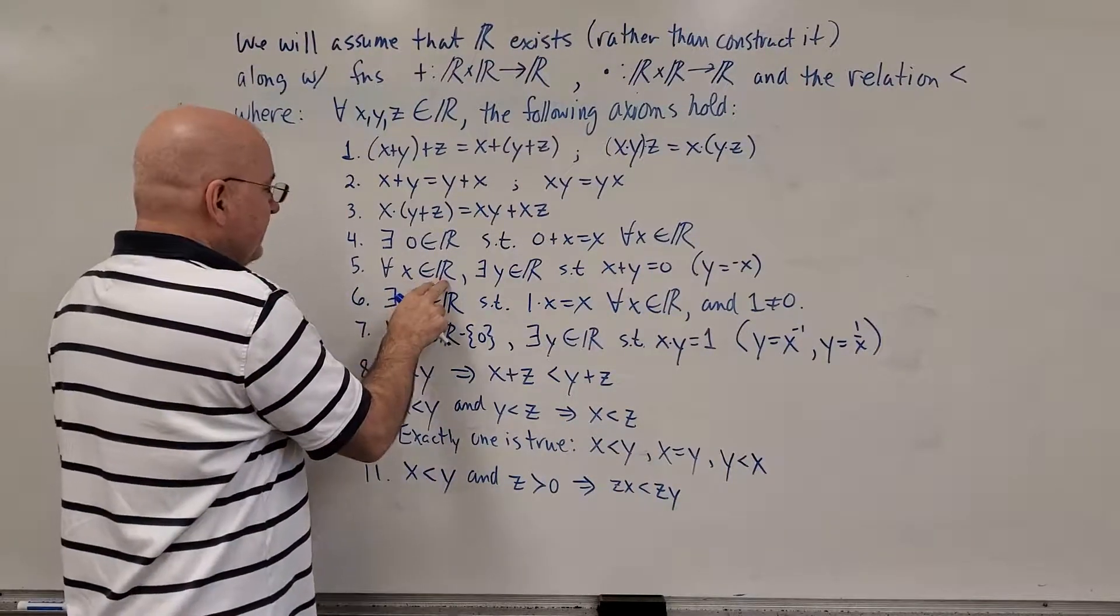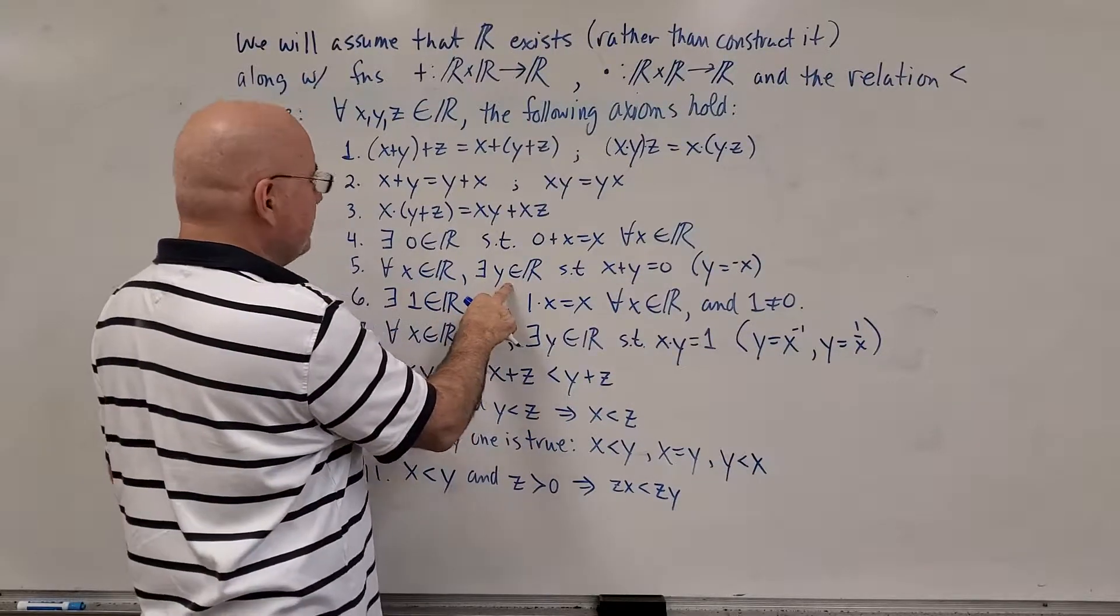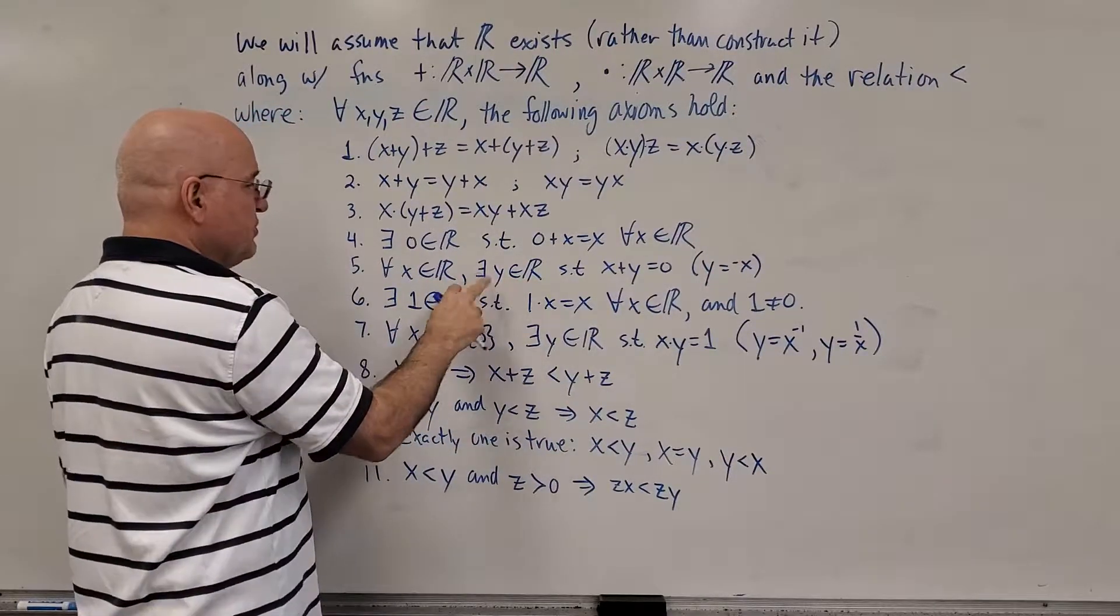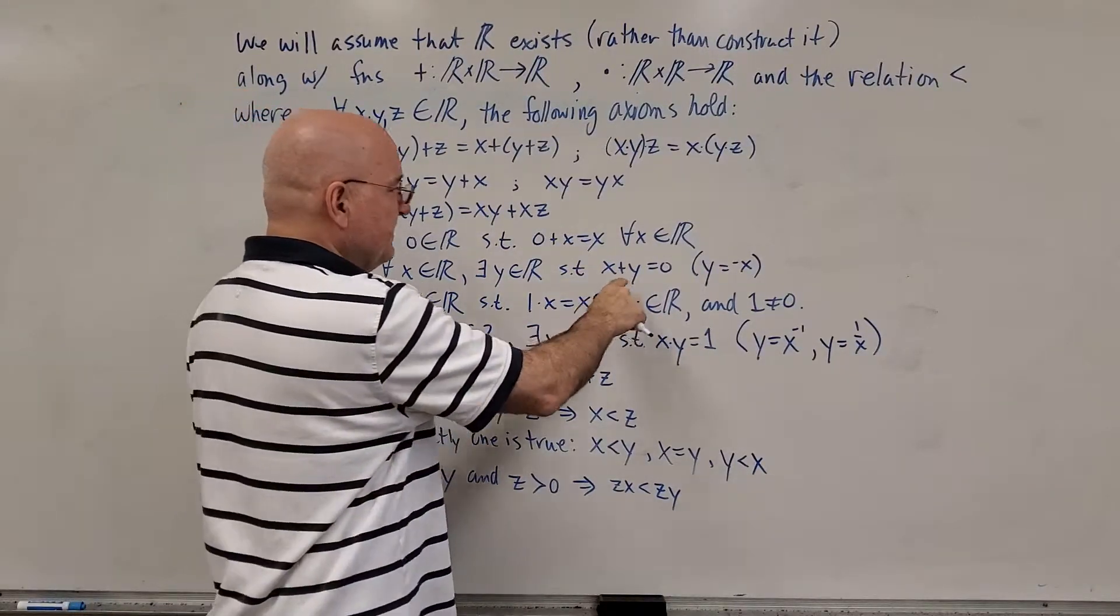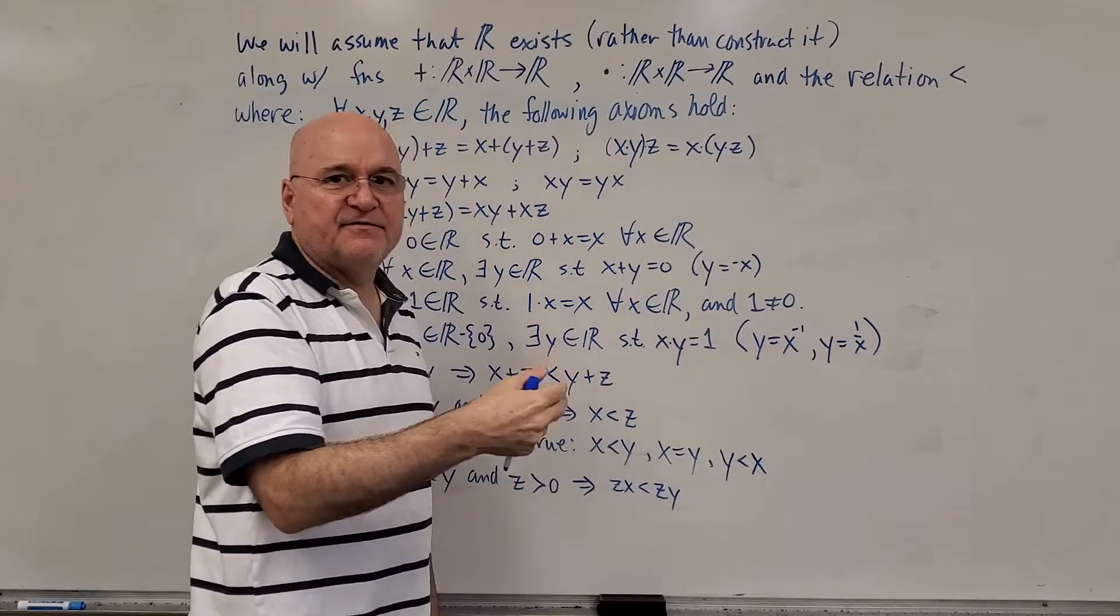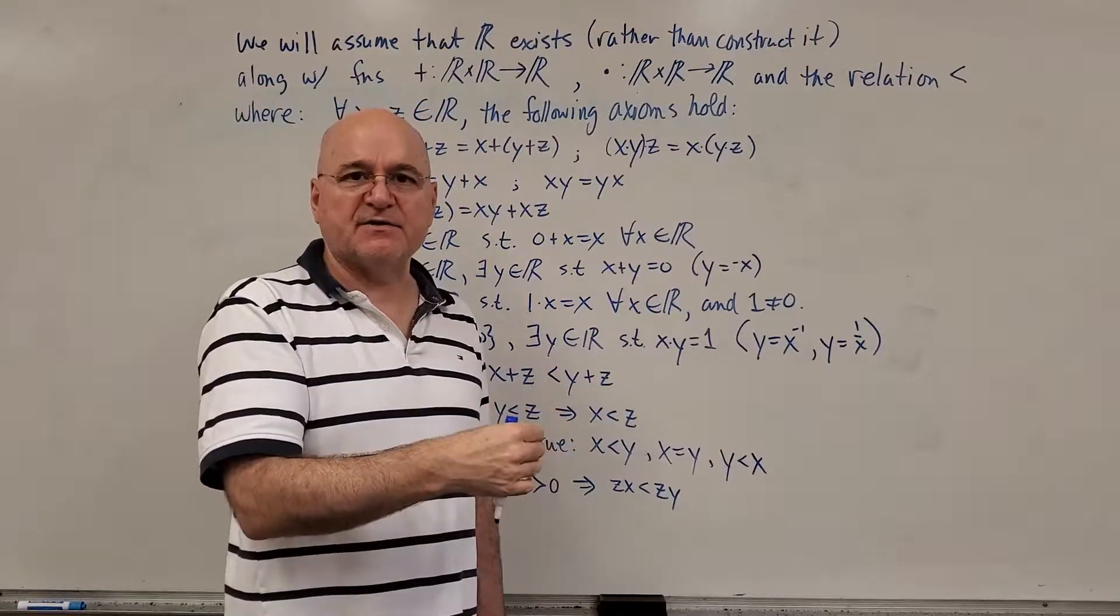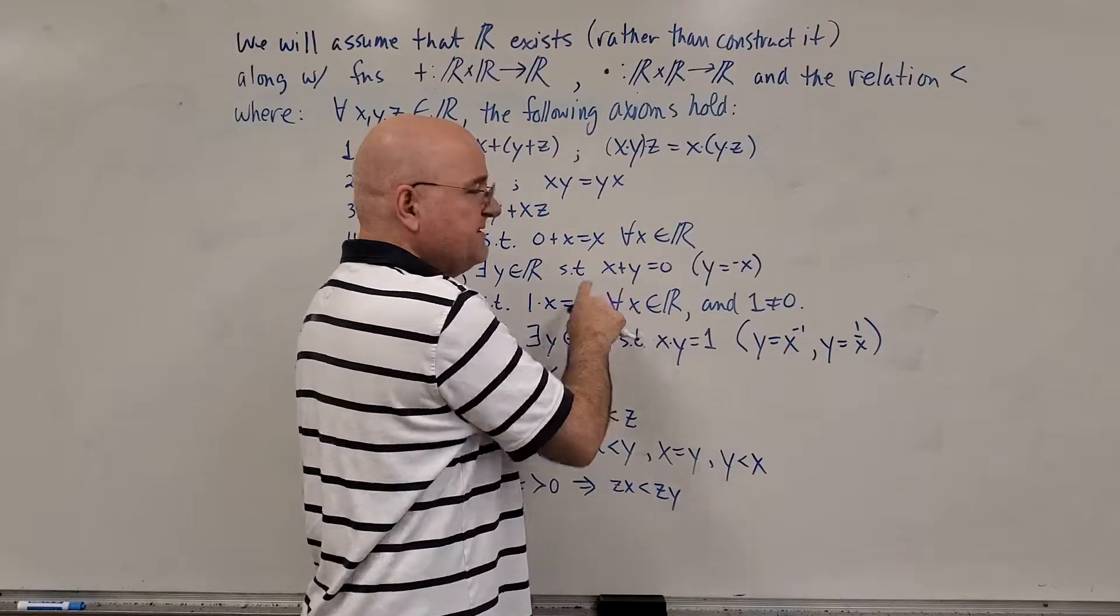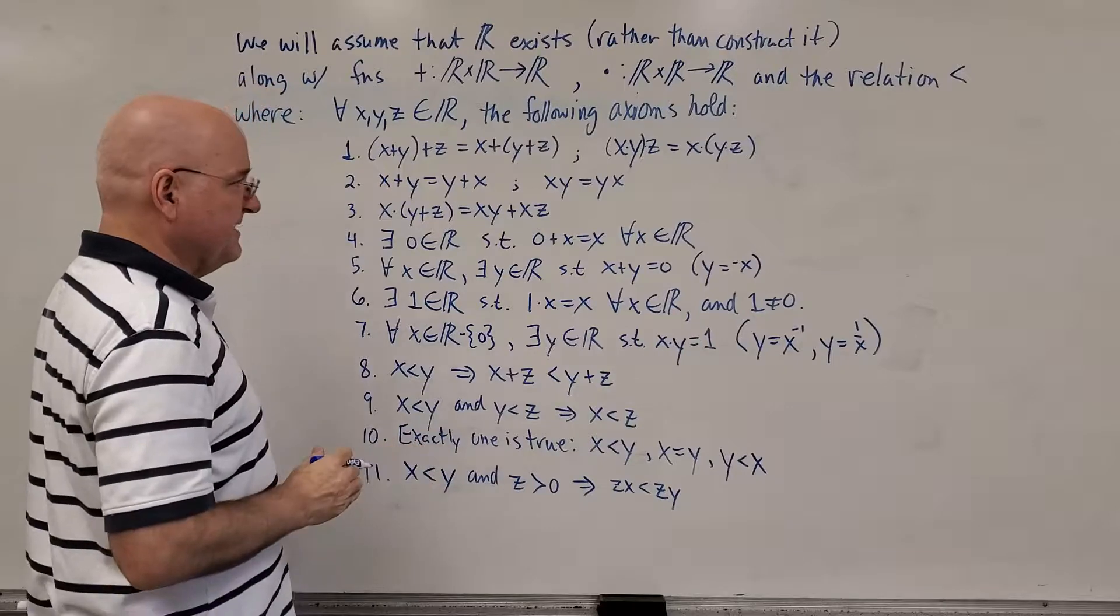For all x in the real numbers, there's also a corresponding y, such that when you add those two terms together, you get zero. And we refer to that number for y, the negative x, the opposite of x. You add them together, you get zero. That means they're there. This is the additive identity of the other. Each number has an additive inverse.